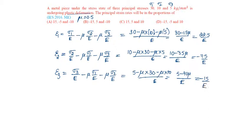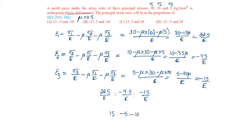So, the proportions of the principal strains are 22.5 by E is to minus 7.5 by E is to minus 15 by E, that is in the ratio of 15 is to minus 5 is to minus 10. Option A.